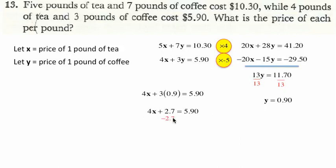I'm going to subtract 2.7 from both sides, and that gives me 4x equals 3.20. Dividing both sides by 4, we get x equals 80 cents.